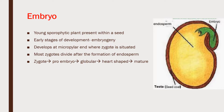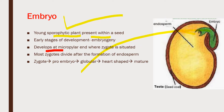The second change which takes place after fertilization is the formation of embryo. The embryo can be defined as the young sporophytic plant which is present within the seed. In the early stages of development, called embryogeny, the embryo develops at the micropylar region where the zygote is situated.